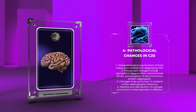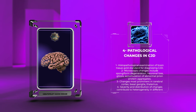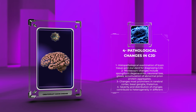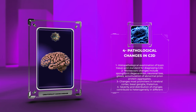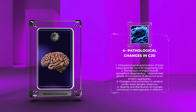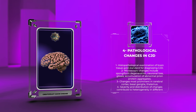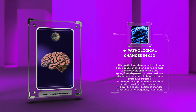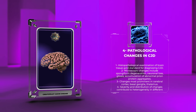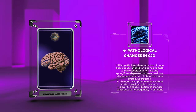Histopathological examination of brain tissue remains the gold standard for accurately diagnosing CJD. The postmortem analysis reveals microscopic changes, including spongiform degeneration, neuronal loss, gliosis, and the accumulation of abnormal prion protein aggregates. These pathological features are most prominent in specific brain regions, such as the cerebral cortex, basal ganglia, and thalamus. The severity and distribution of these changes contribute to the heterogeneity observed in different subtypes of CJD.